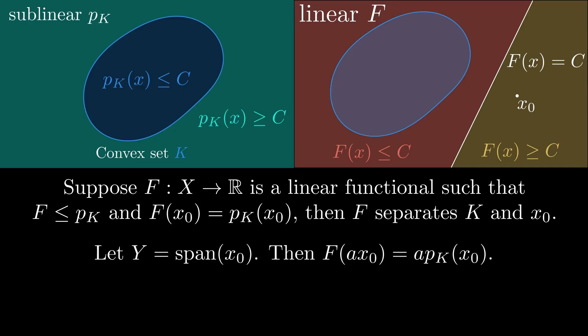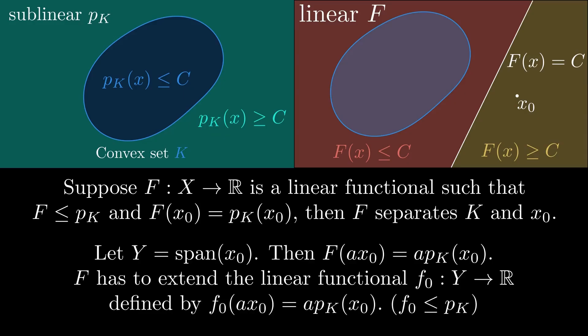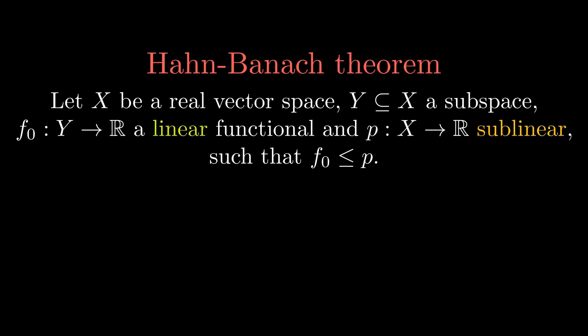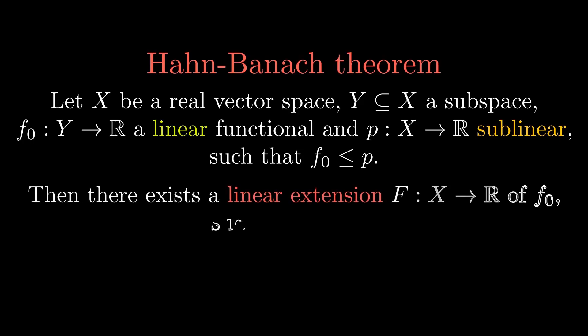By linearity, we also know the values of f in the span of x₀, so f has to extend the linear functional defined on the span. This linear functional is also dominated by p_K. The Hahn-Banach theorem guarantees the existence of the linear functional f, which then provides the hyperplane separating the convex set and the point. The general setting looks like this: we are given a real vector space X with a subspace Y, a linear functional on Y, and a sublinear functional on X which dominates f₀. Then there exists a linear extension of f₀ to X which is also dominated by the sublinear functional.